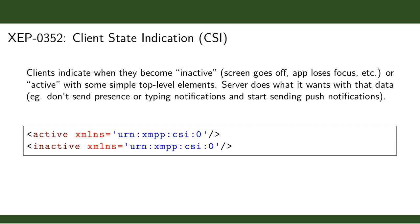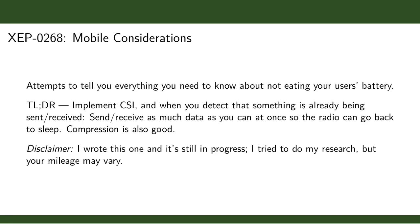XEP-0352, Client State Indication, is a widely supported, very simple extension that uses top-level stream elements to tell the server whether we are 'active' or 'inactive' — whatever that means on your device, such as screen off or app losing focus. The server can do what it wants with this. It might stop sending presence updates or typing notifications when the screen is off, and then update you on your friend's status just once when you send the active signal.